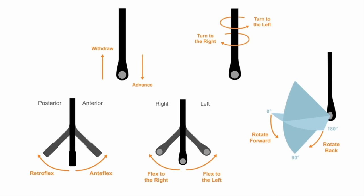This wide variety of probe manipulations gives us a lot of flexibility for obtaining our TEE images. However, it can make things appear confusing, and if you're new to TEE, it's easy to get disoriented. So for the rest of this TEE course, how are we going to help you maintain your bearings and find the views that you want?